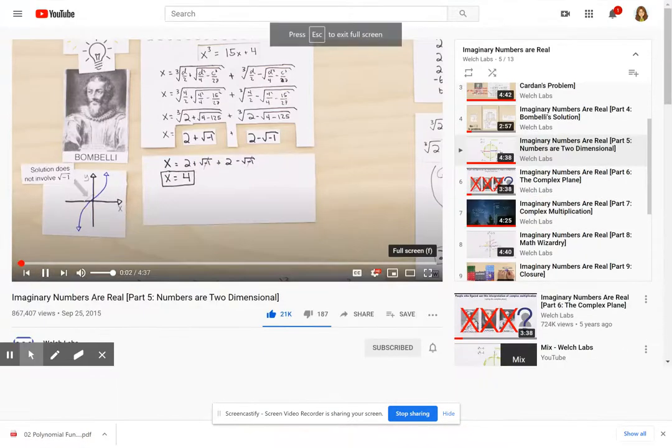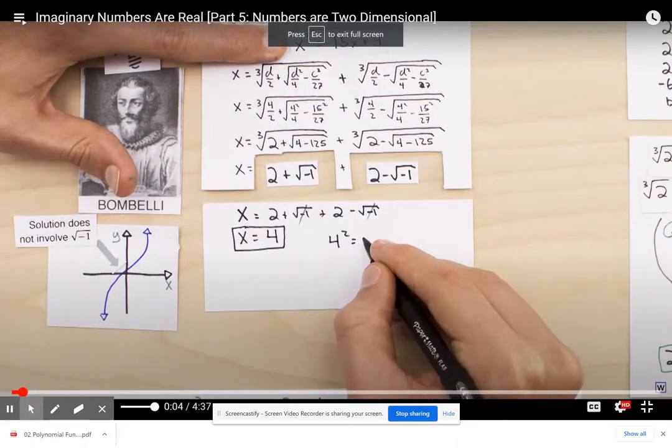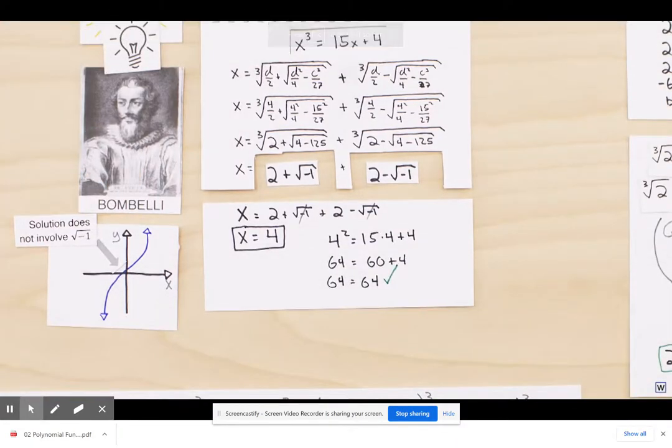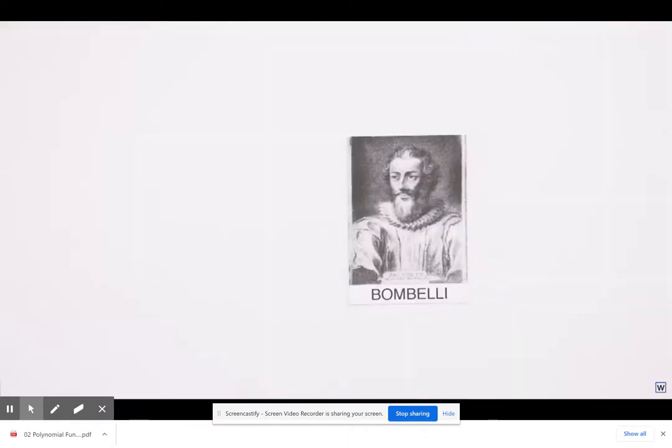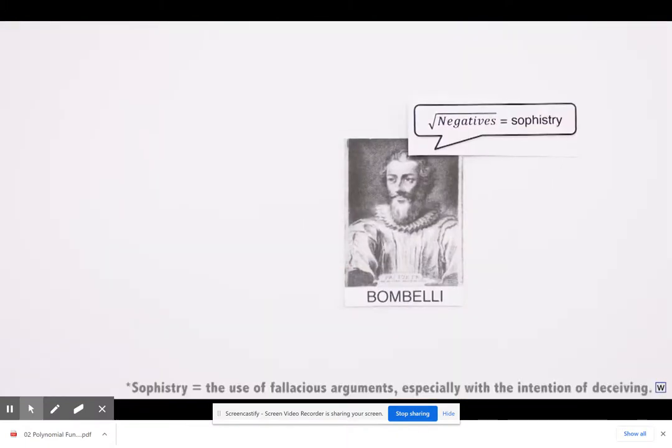Starting off with Bombelli's discovery that if he allowed the square root of minus one to be its own number, he could solve problems that had been stumping mathematicians for decades. Despite the usefulness of his discovery, Bombelli and other mathematicians generally regarded it as a hack. After all, what could it possibly mean to take the square root of a negative number?